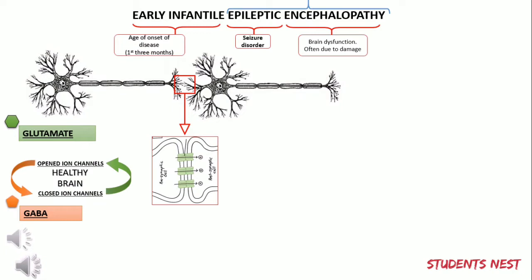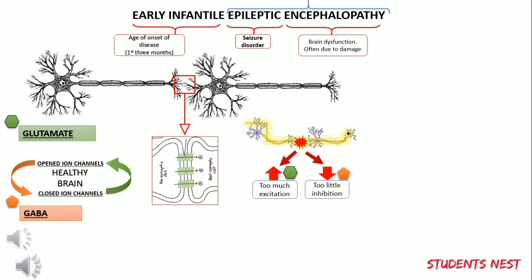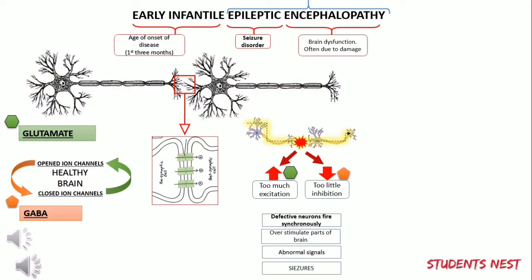Maintaining the balance of excitation and inhibition within the neural circuit is important, especially during the developmental stages. Regardless of the cause, impaired neurons or clusters of neurons start sending out a large number of excitatory signals over and over again. This is due to either too much excitation or too little inhibition at their synapse — basically two sides of the same coin. These defective neurons tend to fire synchronously and excessively, and this amplified discharge overstimulates parts of the brain, generating abnormal signals which result in a seizure.